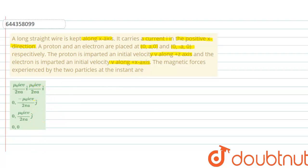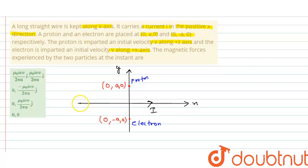Let me draw the diagram first. Here is the situation: a long straight current conductor placed along x-axis and current is flowing along positive x-axis. Here is proton on y-axis at coordinate (0, a, 0) and electron is at coordinate (0, -a, 0).